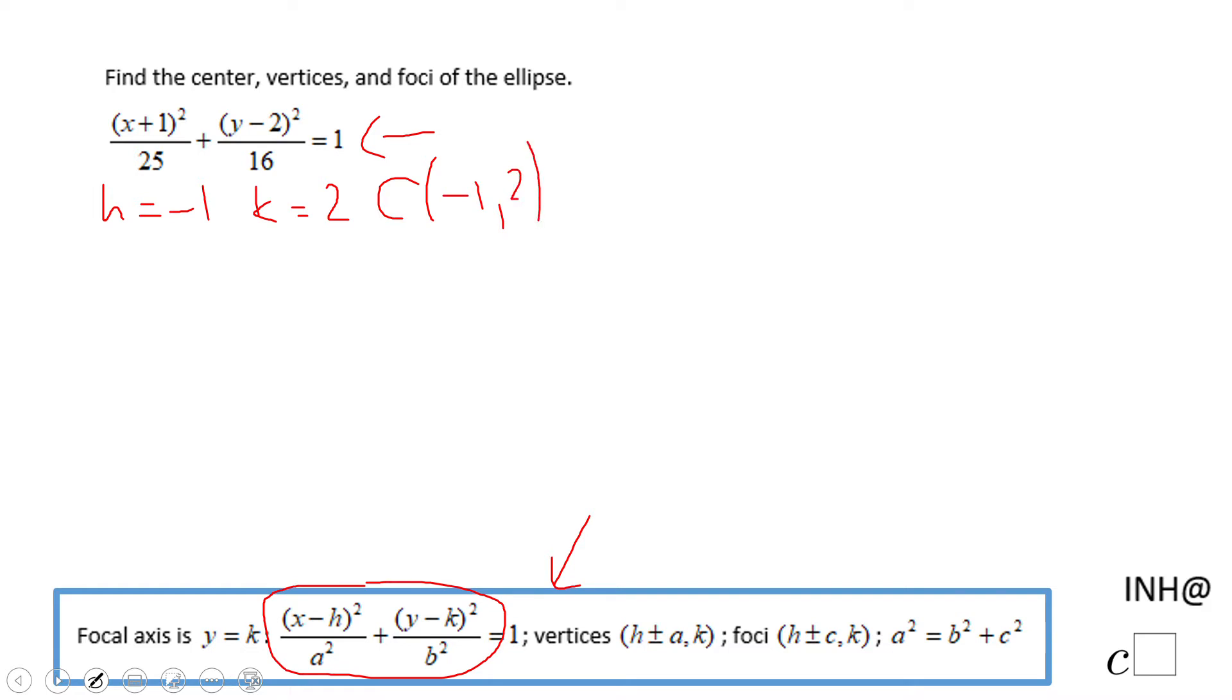Okay then we can look and see a squared is 25, so that means a is square root of 25, so be careful you have plus and minus five. b squared is 16, so b will be plus or minus four, square root of 16.